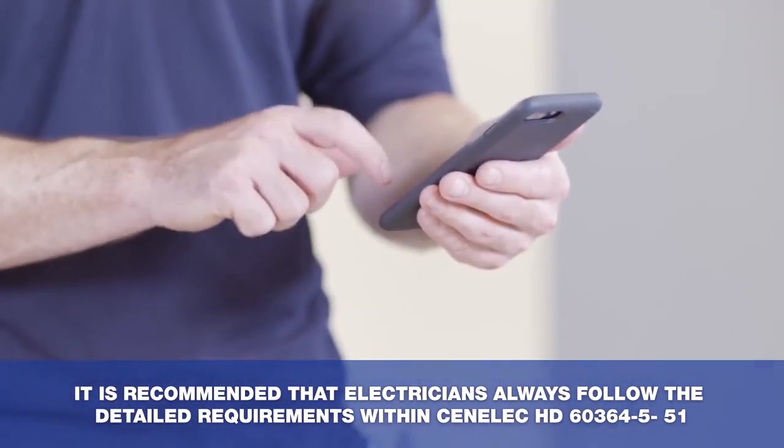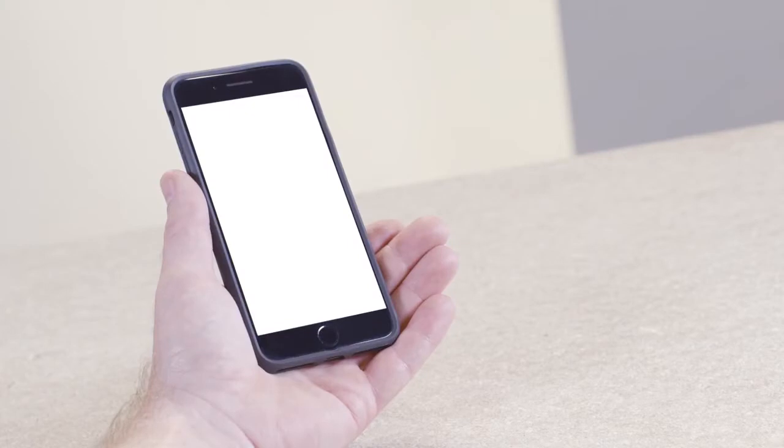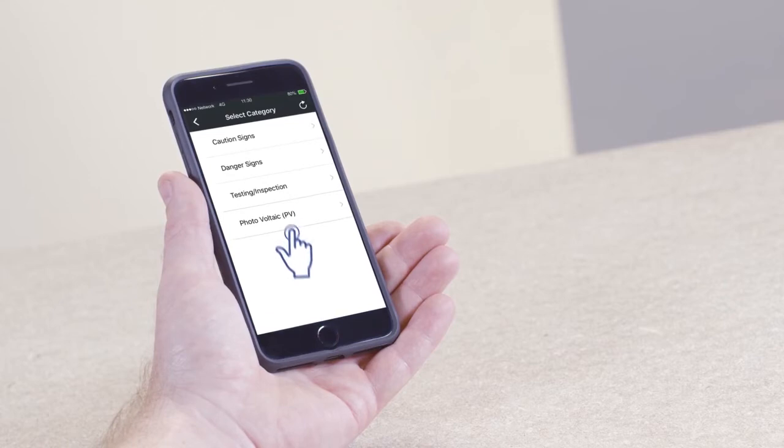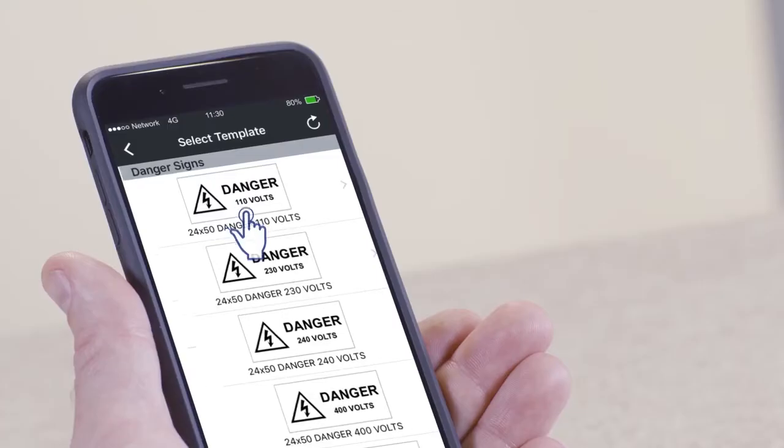Let's start by launching the app. From the main menu, tap the Danger Caution Sign option. Now tap on Danger Signs. Select the template that you want to print.